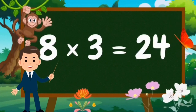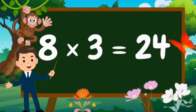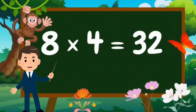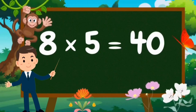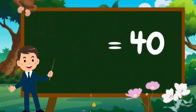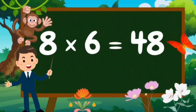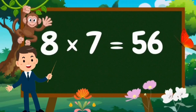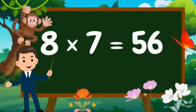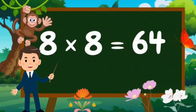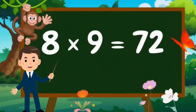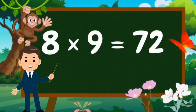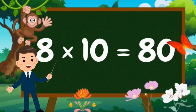Table of Eight. Eight ones are eight. Eight twos are sixteen. Eight threes are twenty-four. Eight fours are thirty-two. Eight fives are forty. Eight sixes are forty-eight. Eight sevens are fifty-six. Eight eights are sixty-four. Eight nines are seventy-two. Eight tens are eighty.